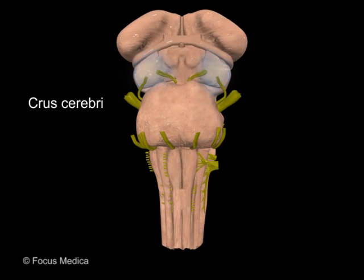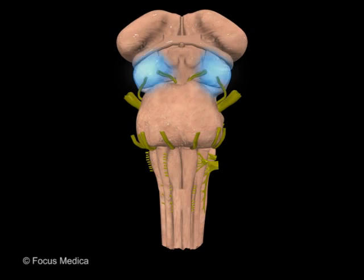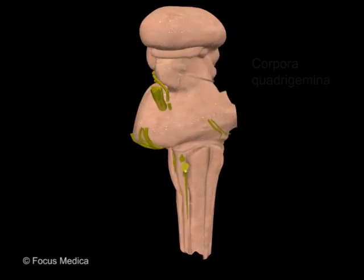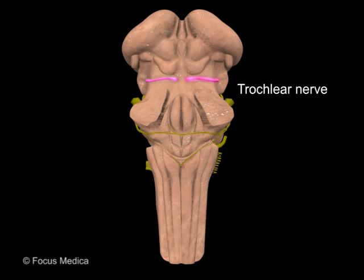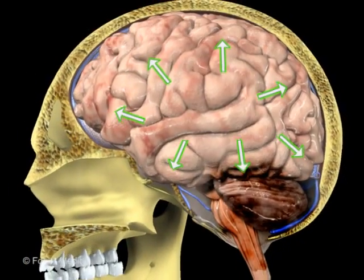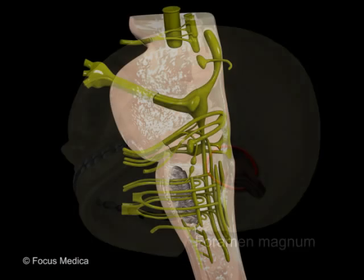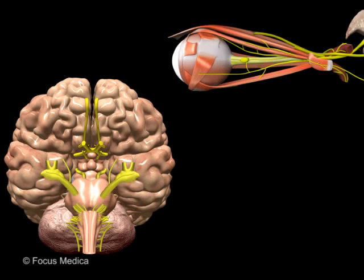The crus cerebri is seen anteriorly and the tectum is visible posteriorly. The crus cerebri are two massive pillars that rise from the pons and reach up to the diencephalon. The oculomotor nerve emerges from the medial aspect. The corpora quadrigemina are seen on the dorsal aspect as four distinct elevations, and the trochlear nerve emerges from this surface. Brainstem herniation is seen during compression of the brainstem from above, causing it to slide down into the foramen magnum. The oculomotor, the trochlear, and the abducent nerve supply the extraocular muscles.